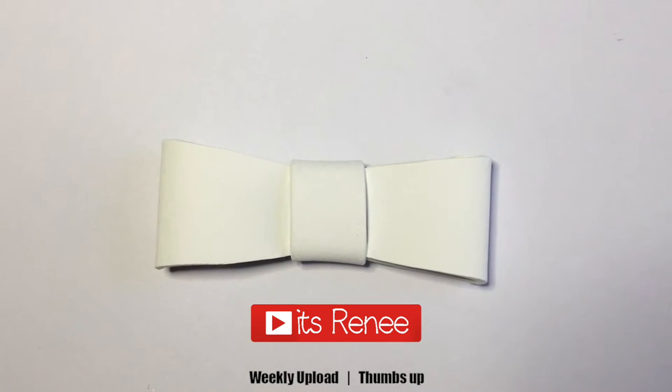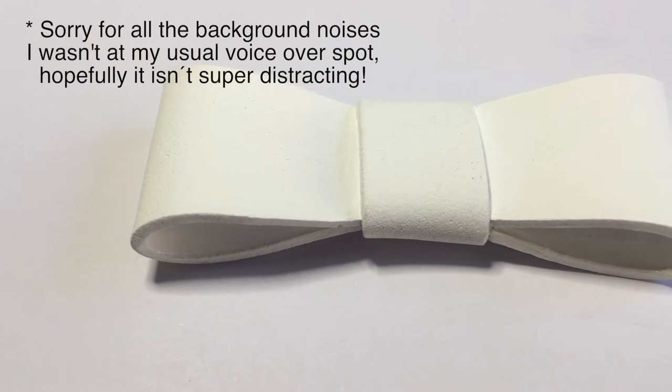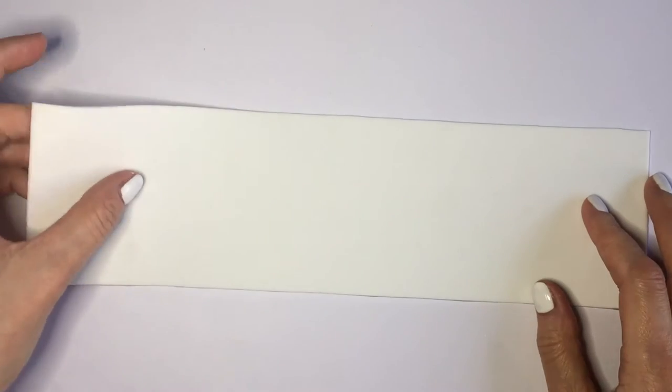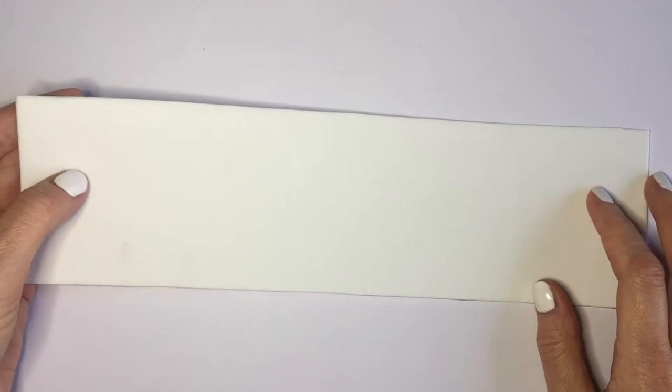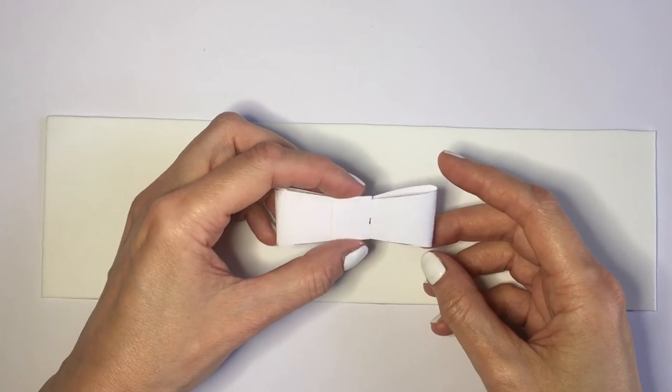Hey guys, it's Renee. So this paper bow is actually really easy to make. You can work with any kind of paper that you like, like regular paper, wrapping paper, or even cardboard. I'm going to be working with foamy paper for this, but just so you know, I did the same thing with regular paper, so it's the same really.